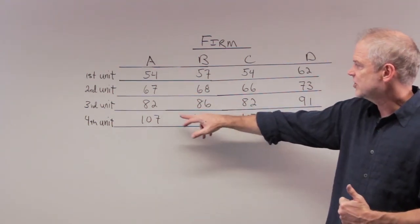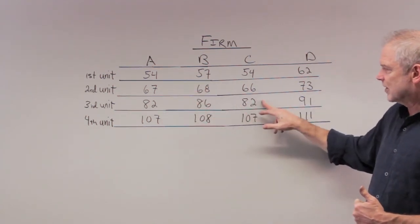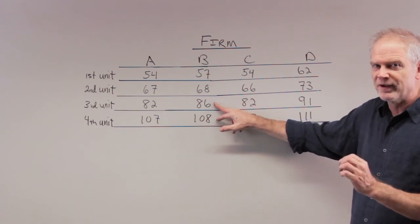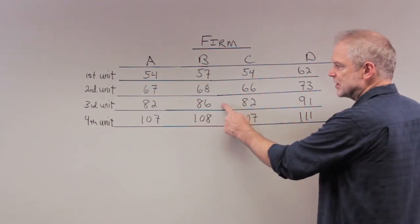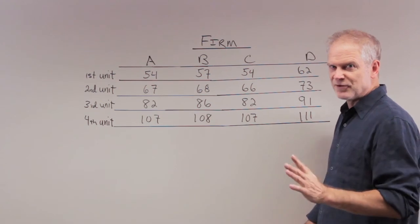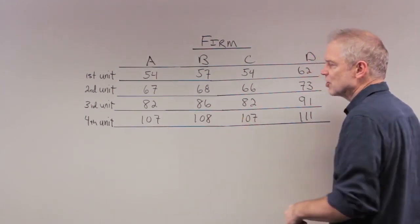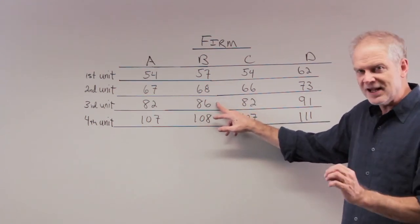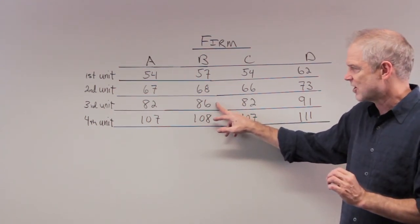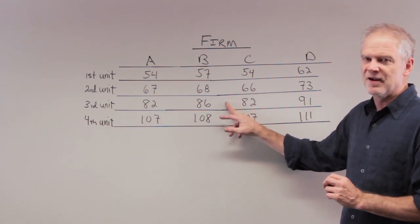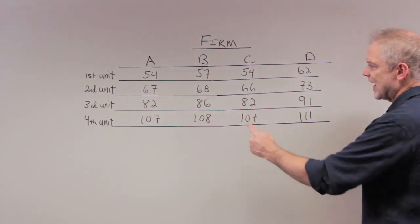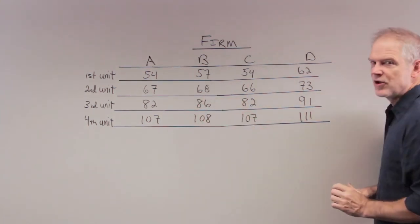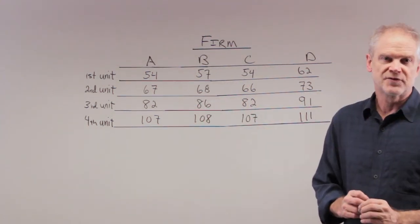This firm will get rid of this unit, so now we're down. We've gotten rid of 9. This firm will get rid of this. We've gotten rid of 10. And here's the 11th unit we want to get rid of. Therefore, we must offer this firm on its third unit the incentive to get rid of this pollution themselves. If we charge a price of $87, it'll be more economical for the firm to eliminate the third unit itself at $86 per unit than to pay the government $87. So anything greater than $86 but less than $91 would eliminate the 11th unit of pollution, which is what the question asks for.